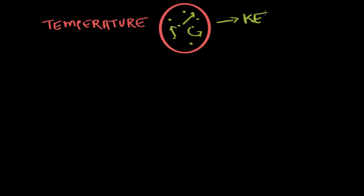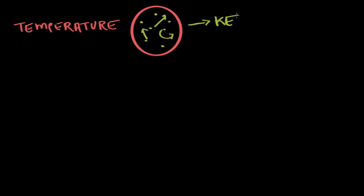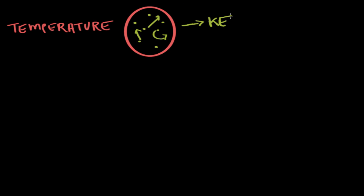If each of those little particles in the system has greater kinetic energy, that means the system as a whole has a larger amount of total energy, and we would say that it has a greater temperature. Because again, temperature is a measure of the average kinetic energy of those particles.